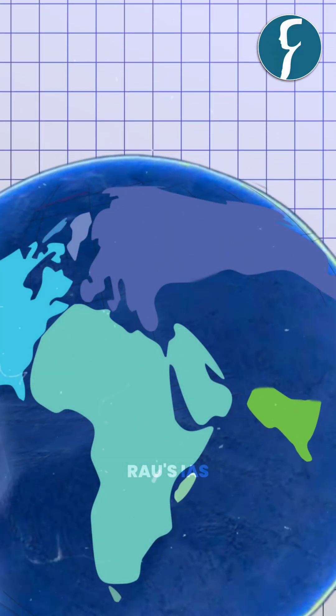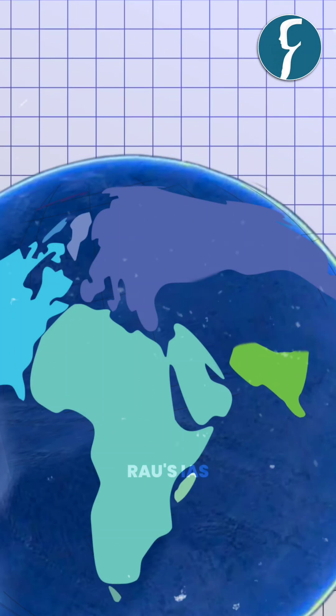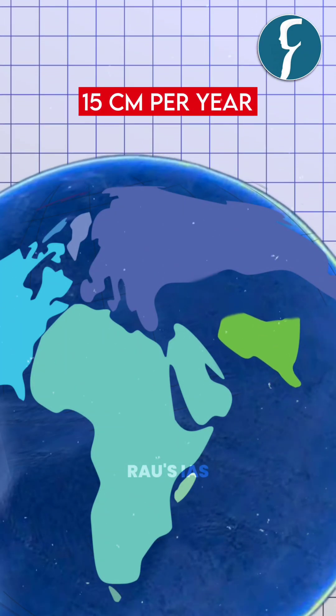Around 70 million years ago, the Indian plate was moving northwards towards the Eurasian plate at a speed of 15 centimeters per year.